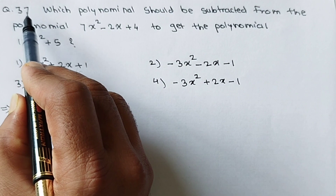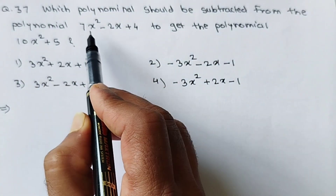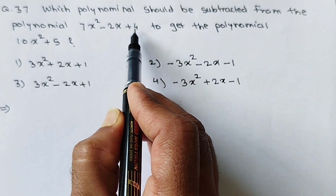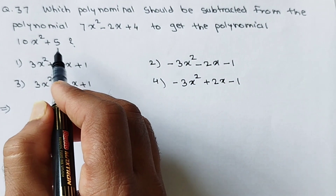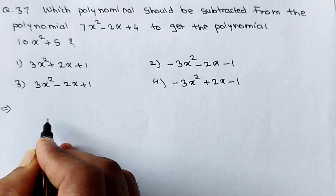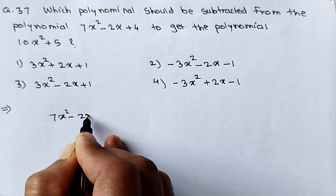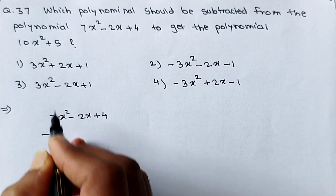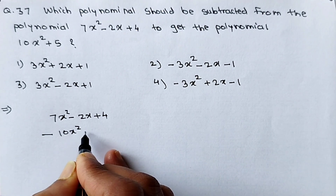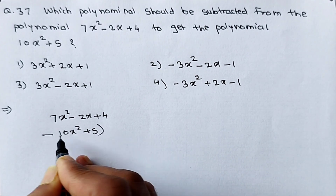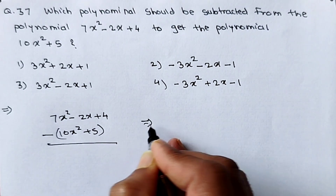See question number 37: Which polynomial should be subtracted from 7x² minus 2x plus 4 to get the polynomial 10x² plus 5? It is very simple — just take the subtraction: 7x² minus 2x plus 4 minus (10x² plus 5). Since it is in brackets, the sign will be changed.